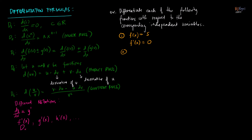If we have another constant function y equals negative 10, then the derivative of y denoted by y prime is also equal to zero. These are the derivatives of the two constant functions — f prime of x equals zero for f(x)=5, and y prime equals zero for y equals negative 10.